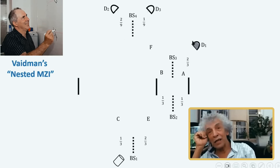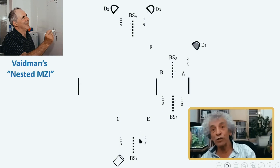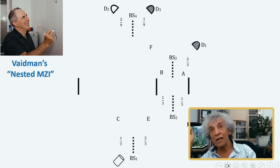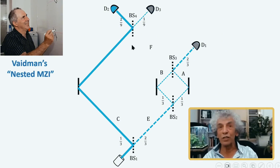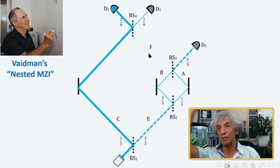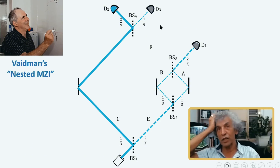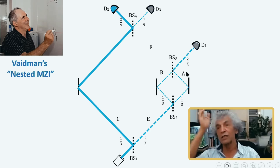This interferometer is somewhat different because the first beam splitter splits the wave function to one third here and two thirds here. So you end up with one third here, one third here, one third here — these are the probabilities of the particle being in these places. Now you pick the cases in which a detector did not click. So you have eliminated all this part of the history — you are sure the photon did not go this way, but this way. And then the other detector does not click. The solid line shows the only possible trajectory, because this one did not click and this one did not click.